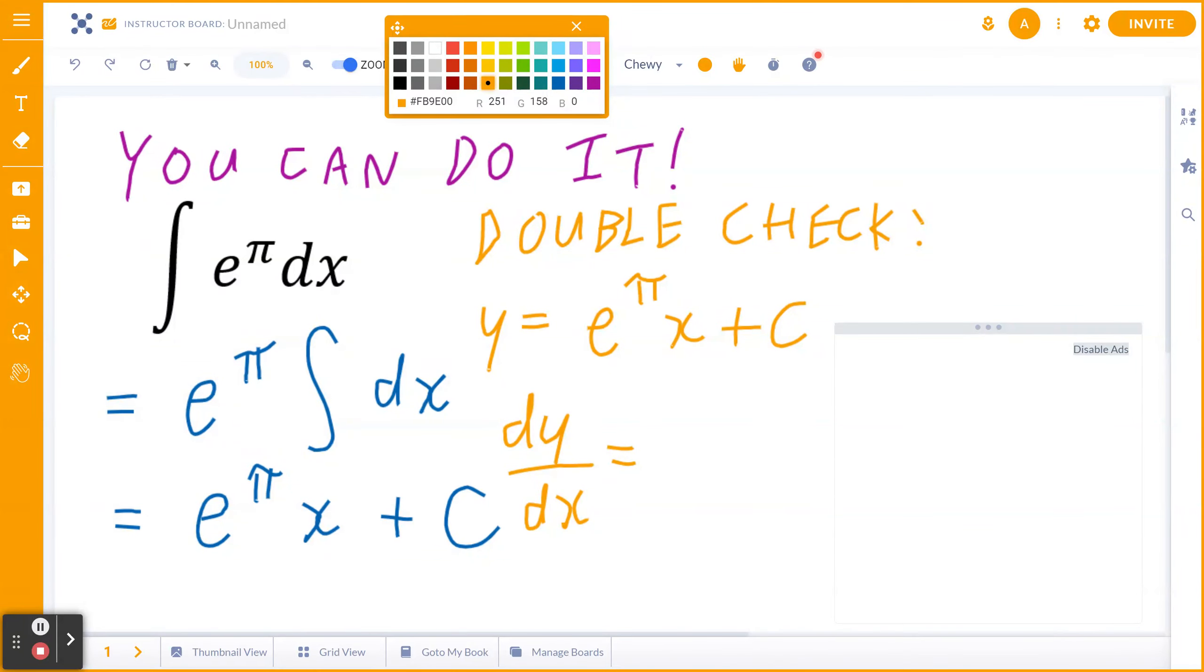And in fact, when you do find the derivative of e to the power of pi times x, that's going to be e to the power of pi. When you find the derivative of c, that becomes zero.